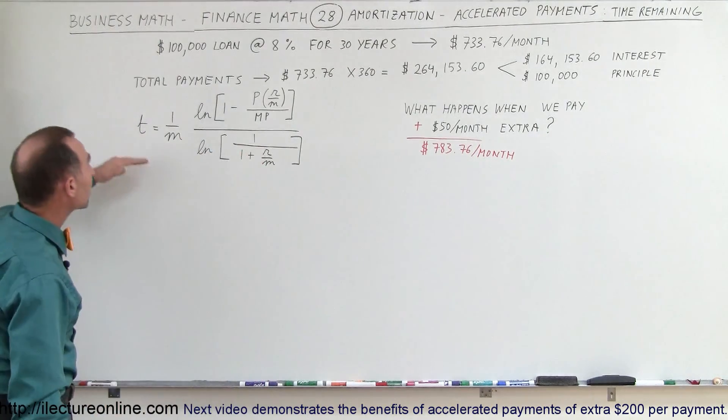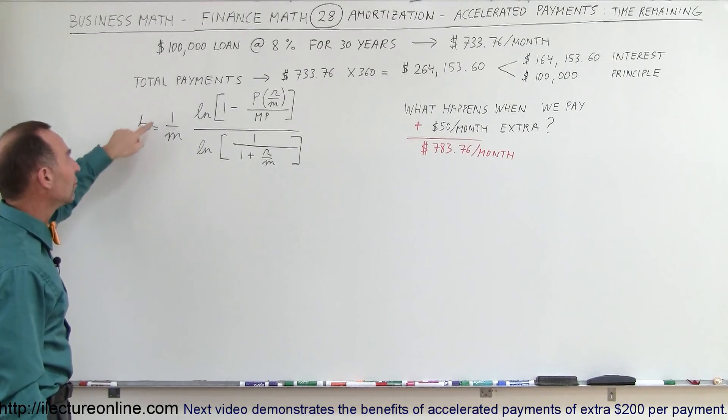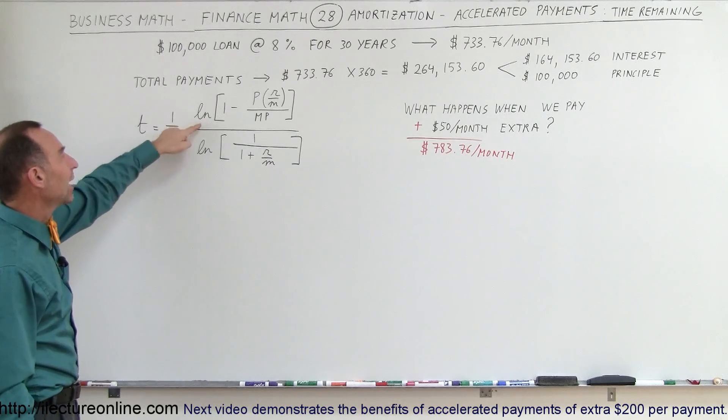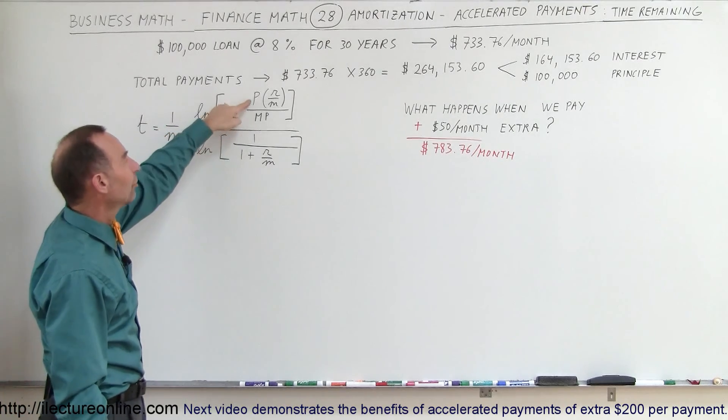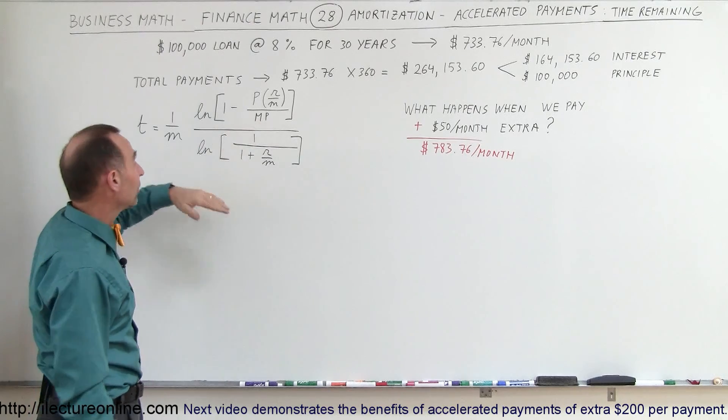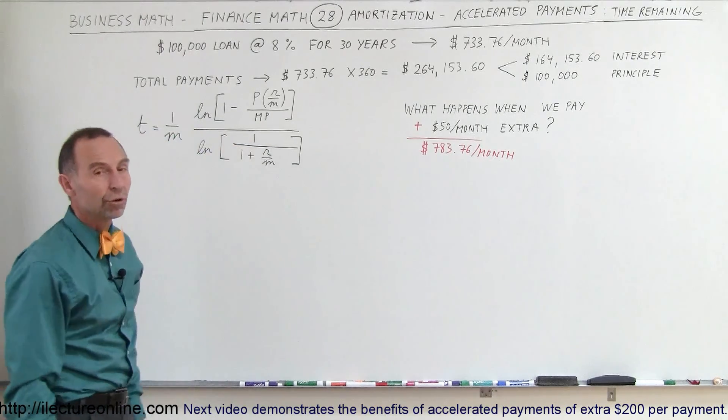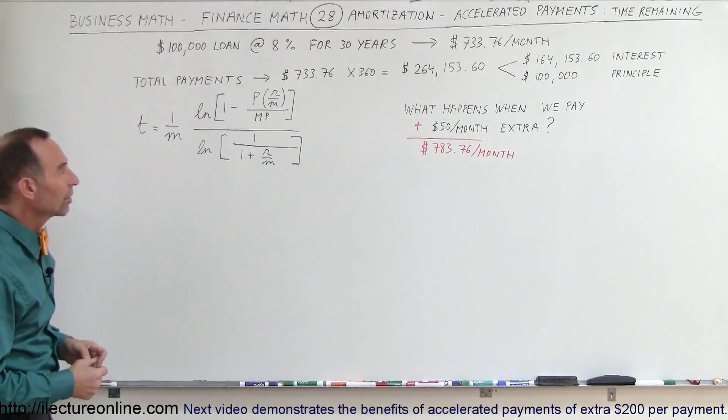So the equation over here is called the time remaining equation. The time in years is equal to 1 over 12 times the natural log of 1 minus the principal balance times the rate divided by 12 divided by the monthly payment and divide the whole thing by the natural log of 1 over 1 plus the rate over m, the number of months in a year.